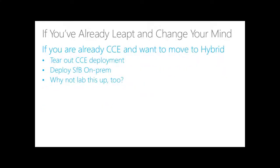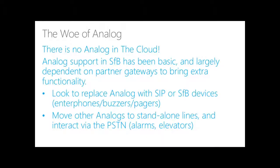Coming the other way — if you've got CCE deployed and want to move to hybrid — is a little simpler: you can yank out the CCE and deploy a bare-bones Skype infrastructure just to get calls flowing, then build out the rest over time and move your users to it. I'd still lab this one up too, because there's really no good rollback plan or intermediate step — you've got to push through. Virtual machines and Office 365 access are inexpensive compared to an outage lasting into Monday or Tuesday because you ran into something unexpected.